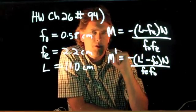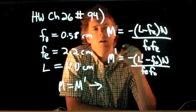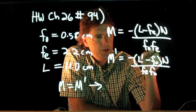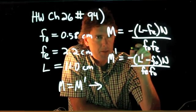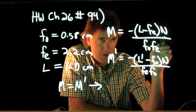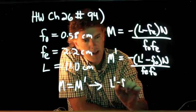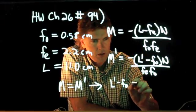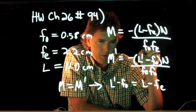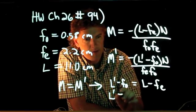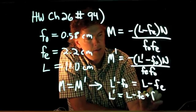Now those two things are equal: M equals M prime. And if M equals M prime, then a bunch of stuff cancels out. The denominator is the same on both, that cancels out. The negative sign out in front is the same on both, that drops out. N is the same on both, that drops out. And so all we're left with is L prime minus FO from the second equation equals L minus FE from the first equation.